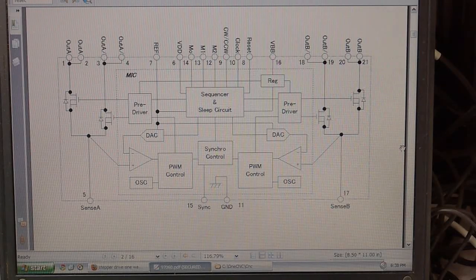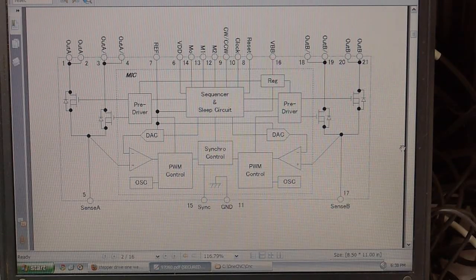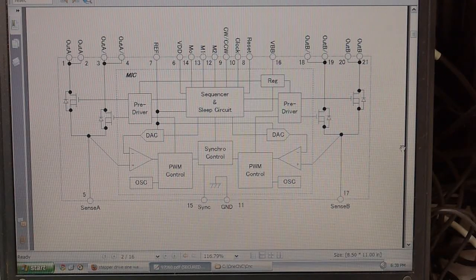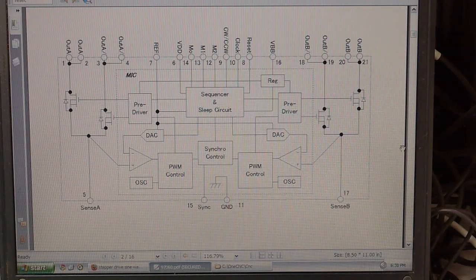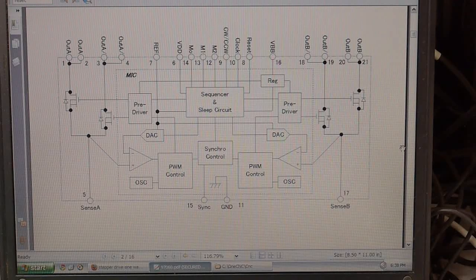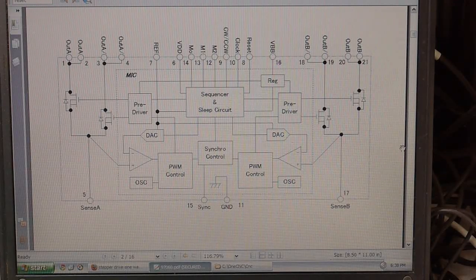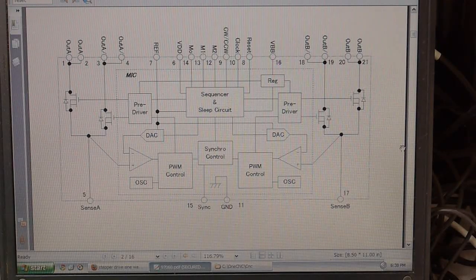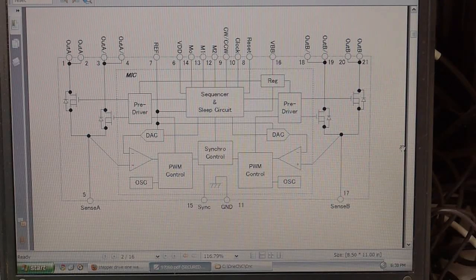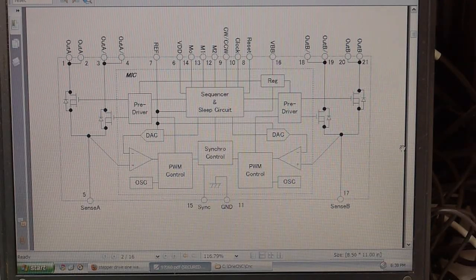So it really needs to have a current sense resistor in series with the motor winding and then it checks the voltage across that sense resistor and compares it to the reference voltage so that it knows when to cut off the motor current. So by changing the reference voltage you can control how much current you want to go through each phase.